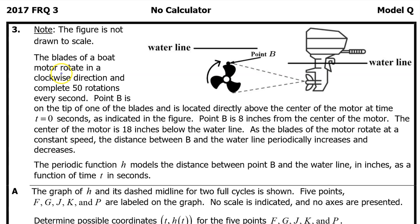The blades of a boat motor rotate in a clockwise direction and complete 50 rotations every second. Point B is on the tip of one of the blades and is located directly above the center of the motor at time t equals 0 seconds, as indicated in the figure. Point B is 8 inches from the center of the motor. The center of the motor is 18 inches below the waterline. As the blades rotate at a constant speed, the distance between B and the waterline periodically increases and decreases. The periodic function H models the distance between point B and the waterline in inches as a function of time t in seconds.